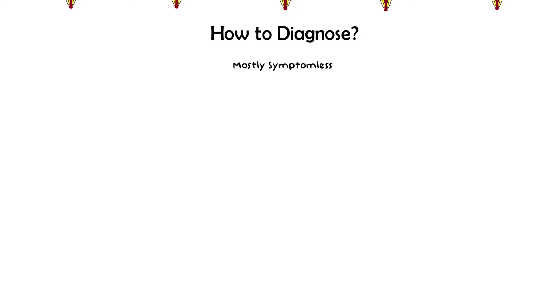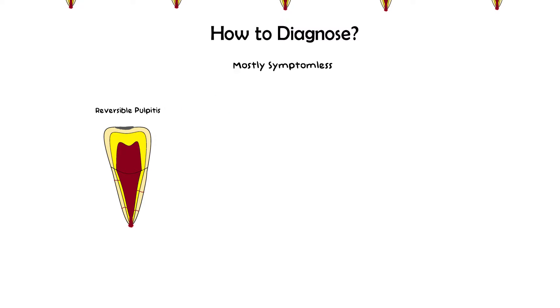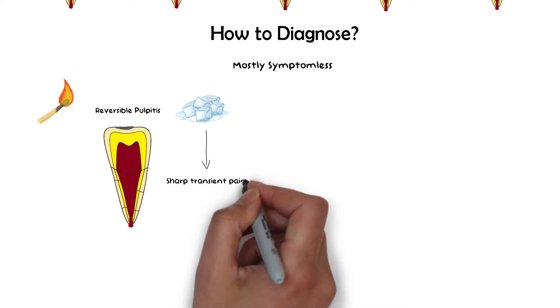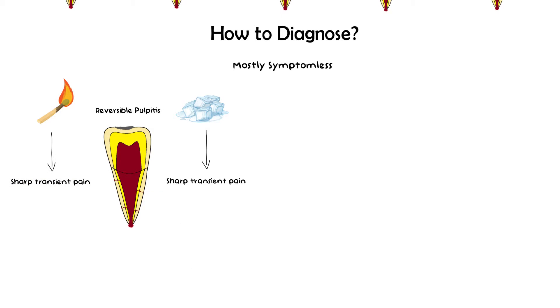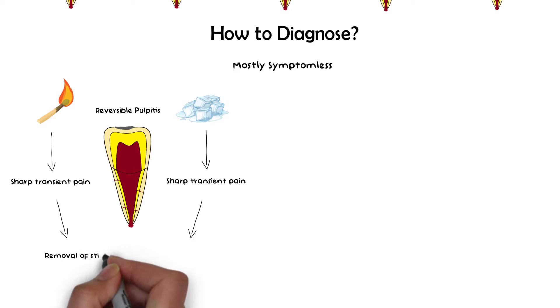Reversible pulpitis is mostly symptomless, but if symptoms do occur they follow a particular pattern. Application of either hot or cold stimuli causes sharp, transient pain on a tooth suffering from reversible pulpitis — so severe that it is unbearable for the patient. Removal of these stimuli relieves the pain immediately.